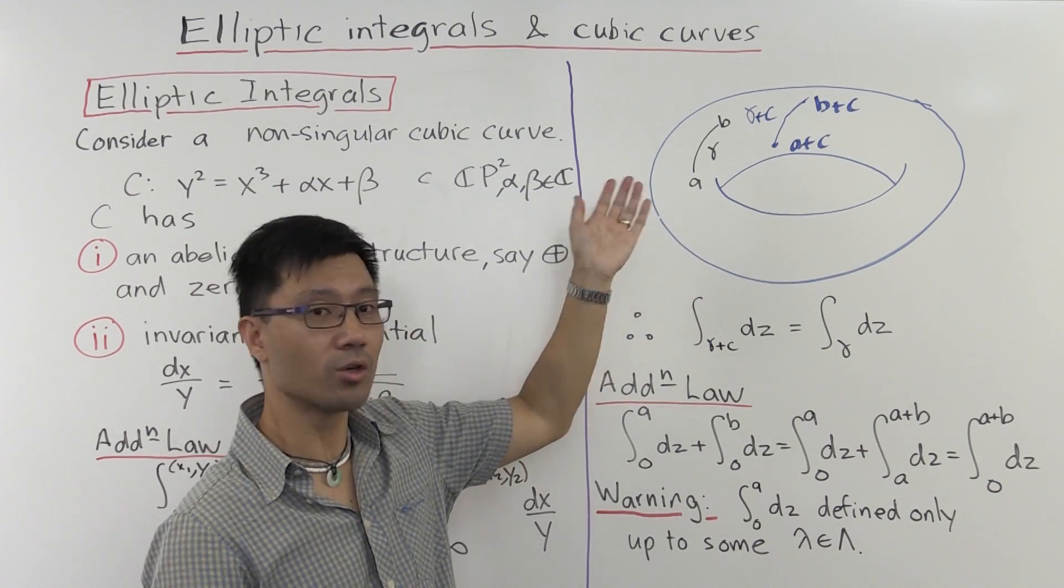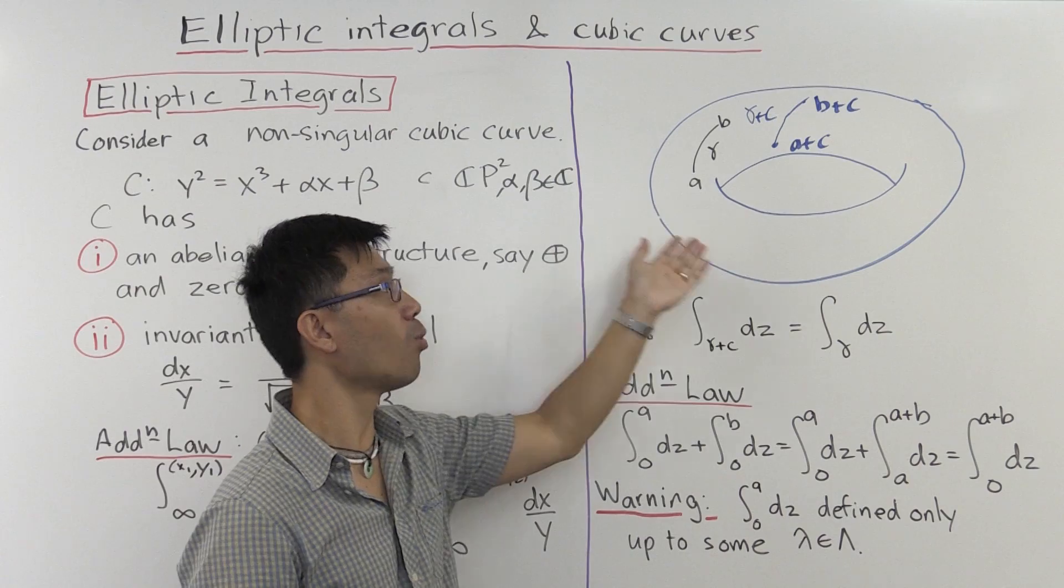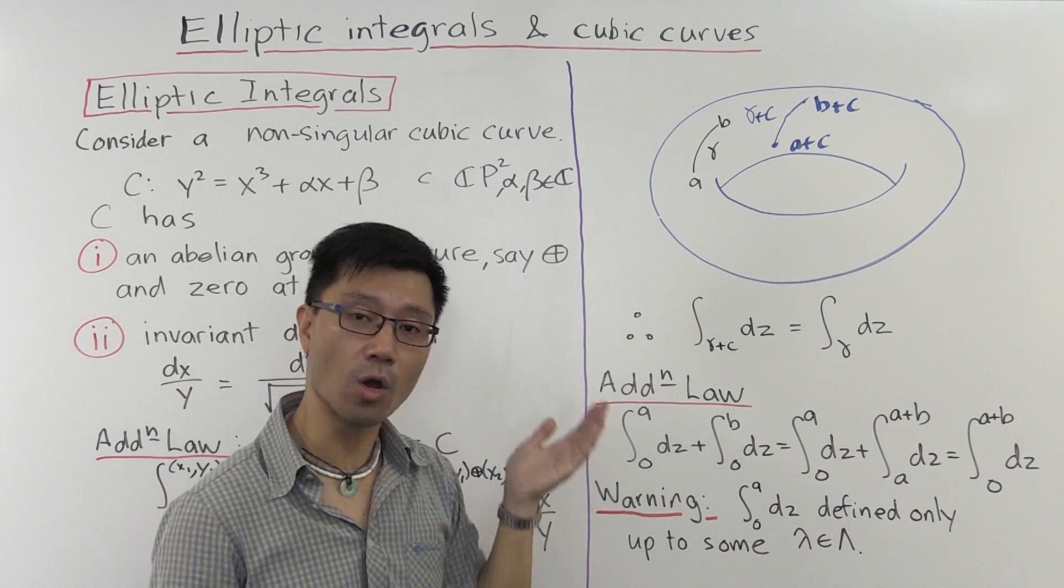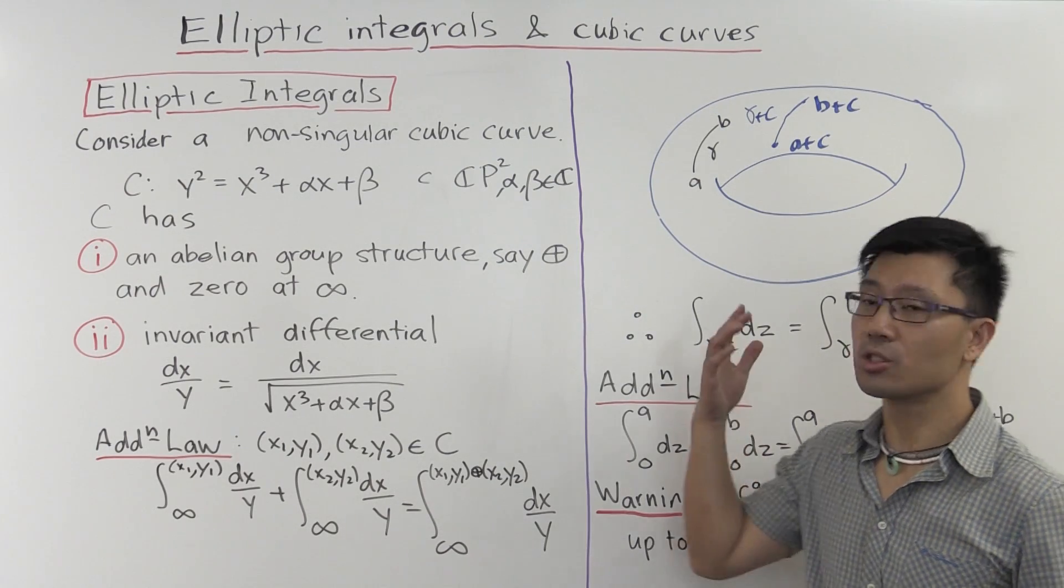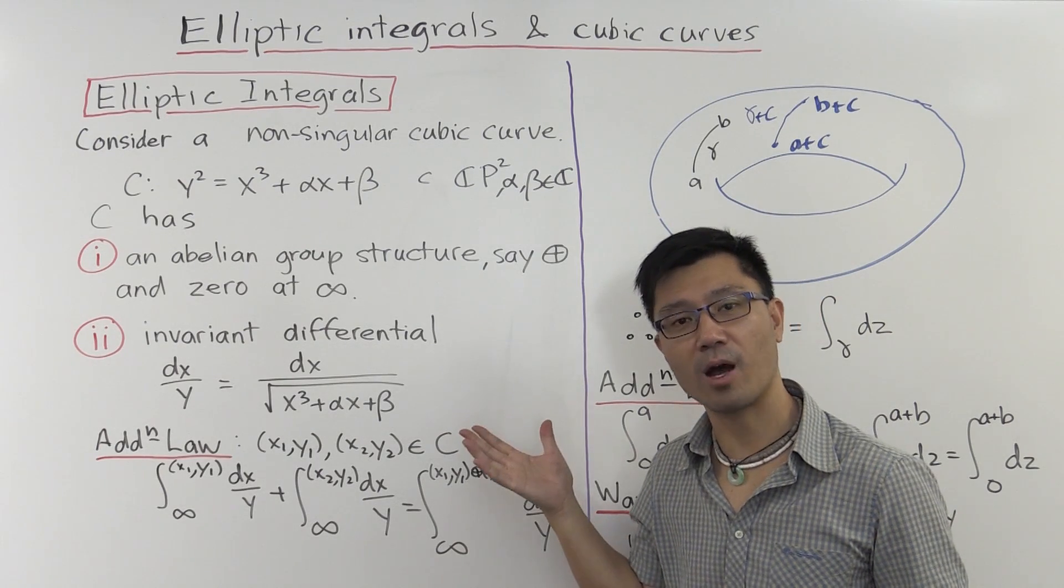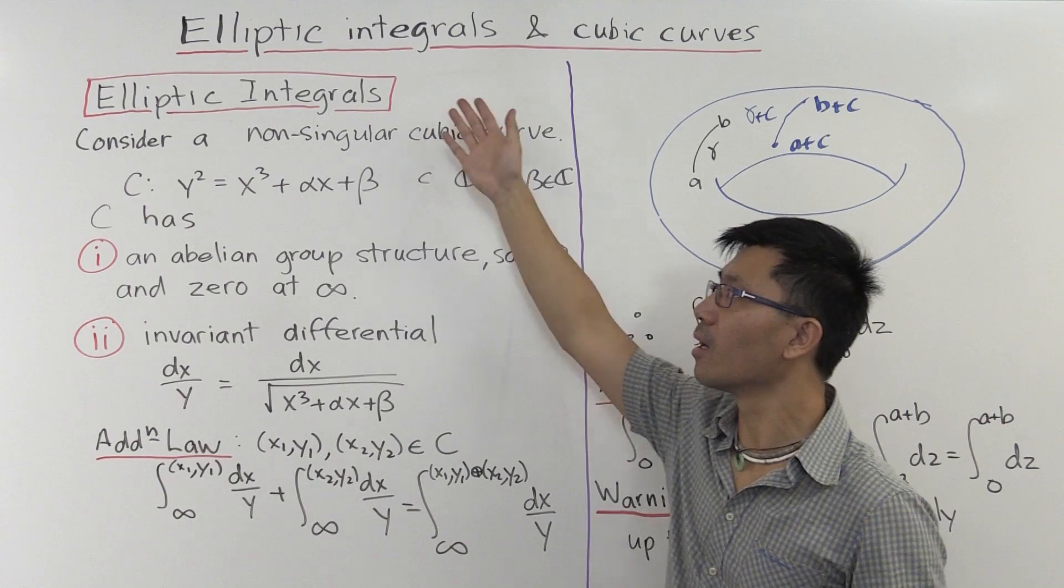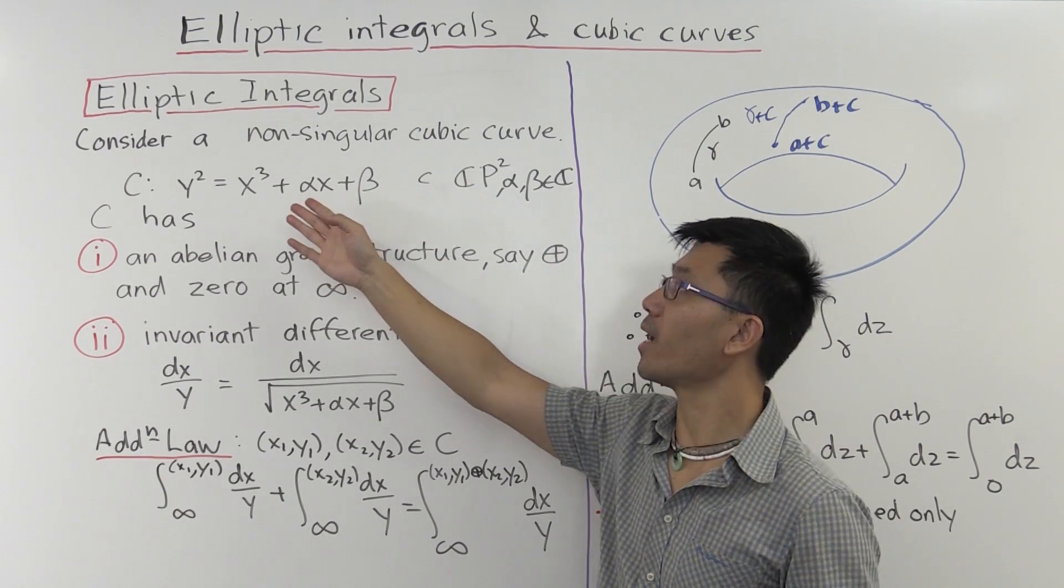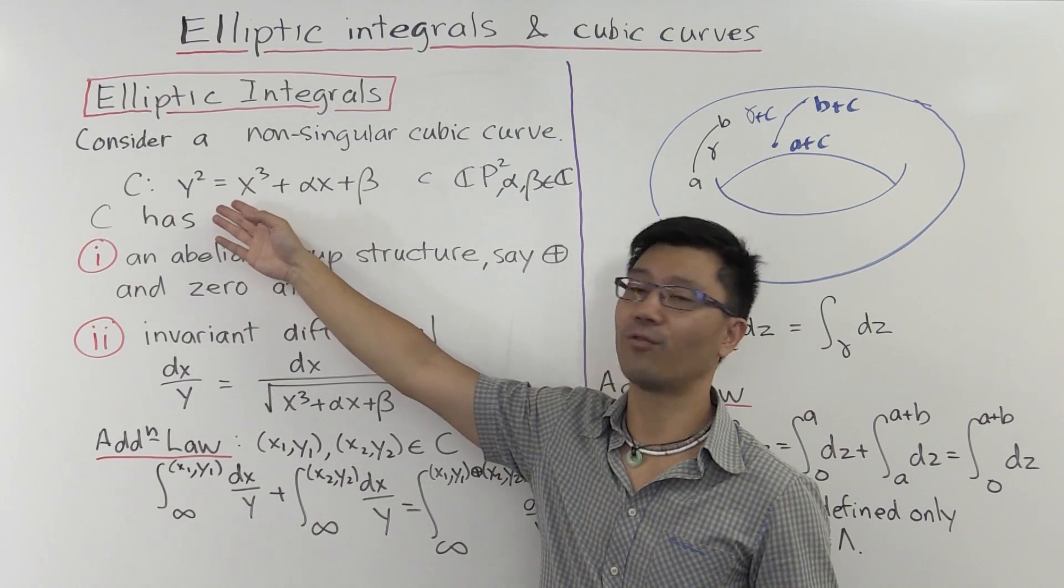Now, remember, non-singular cubic curves are also isomorphic to these two tori. So, in fact, they also have these two properties. So, if we apply this argument in that case, we'll now get something rather interesting. Let's see what we get.